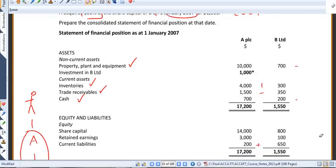If I said to you, what are B's net assets at this date, the 1st of January 2007? What are B's net assets? Now, be careful. If you're thinking 1,550, well, you're halfway there.